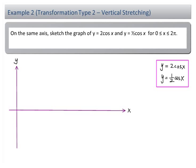I will discuss another form of vertical translation — that is vertical stretching or vertical compression. I'm going to plot y equal to 2 cos x and y equal to half cos x. Take note that if the value here is more than 1, then this is vertical stretching. If the value is less than 1, then this is vertical compression. We start by plotting y equal to cos x.